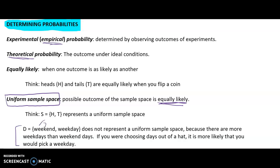If we define weekend as Saturday and Sunday, there are seven days in a week but only two are weekend days, so the probability of drawing a weekend day is two-sevenths. If we define weekday as Monday through Friday, there are five weekdays, so the probability of drawing a weekday is five-sevenths. Since those probabilities are not equal, the sample space D is not uniform.